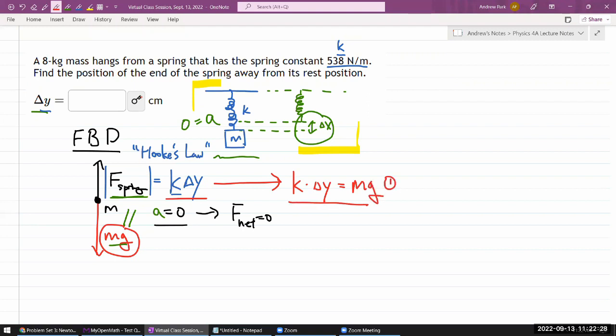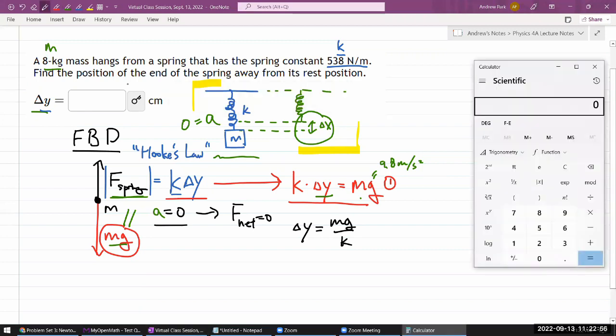So you have one equation, and let's count our unknowns, hopefully only one. This is the only unknown. I think I'm given every other value. Let's see, g is just 9.8 meters per second squared as usual. So I can solve this for my displacement. I'm just going to do the algebra in my head, mg over k, and just plug in the numbers. Let me do that on a calculator. Mass, 8 kilograms, times g, 9.8, divided by spring constant, 538 newtons per meter.